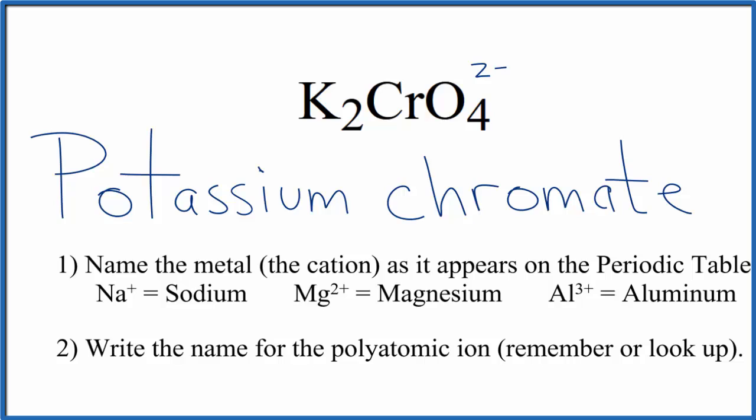Potassium, that's in group one, that's one plus. So we have to have two of these one plus potassium ions to balance this two minus on the chromate ion, to give us a net charge of zero. That's why we have K2CrO4.